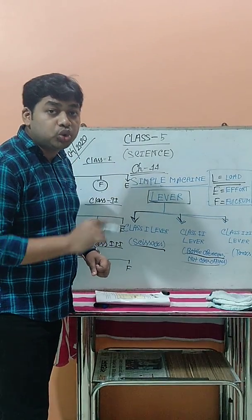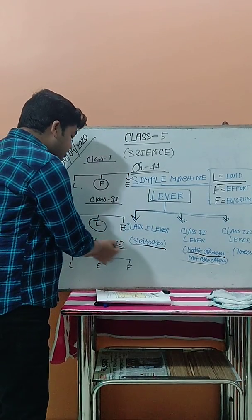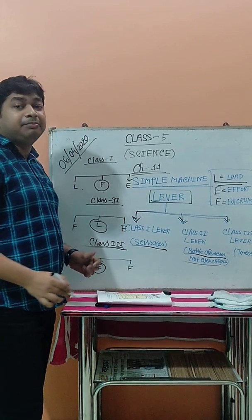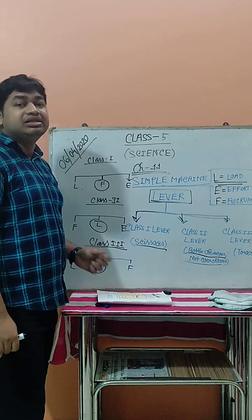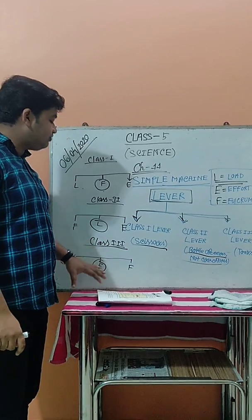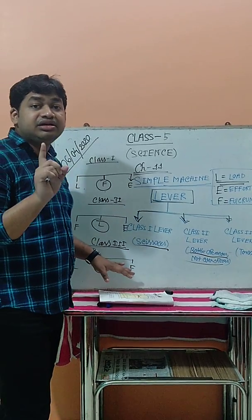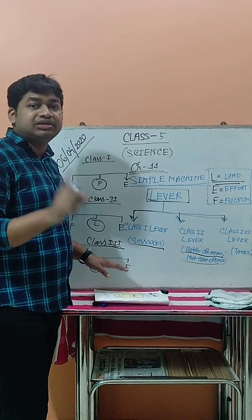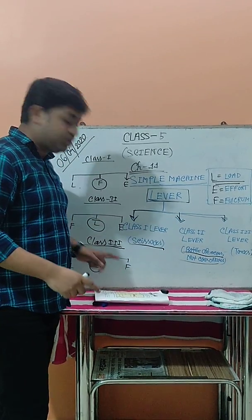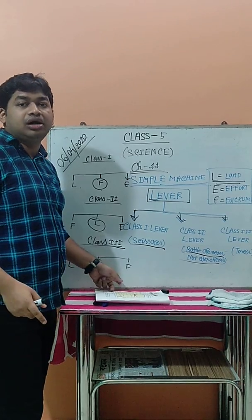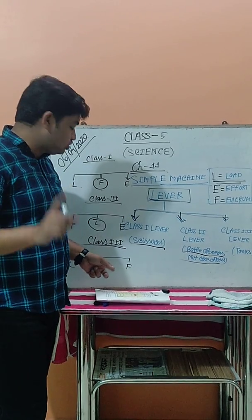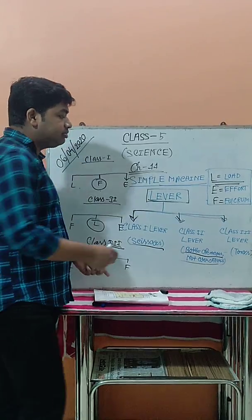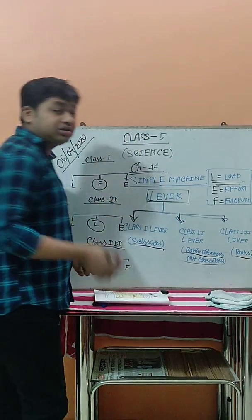The third is the Class 3 lever. In this type of lever, the effort is located between the load and the fulcrum. This type of lever is known as a Class 3 lever. Examples of the Class 3 lever are tongs and fishing rods.